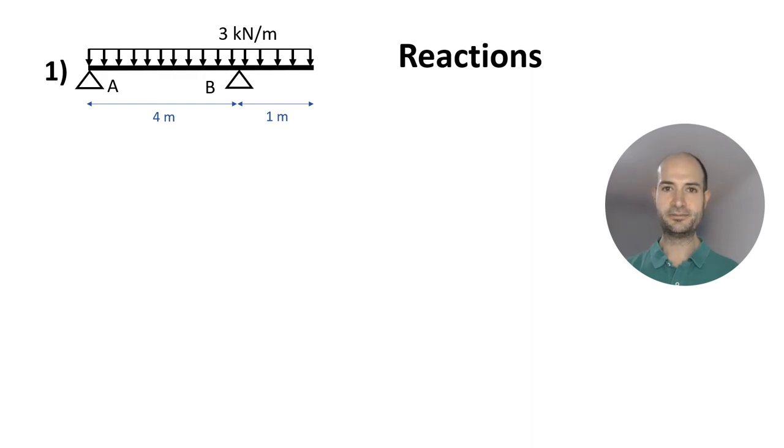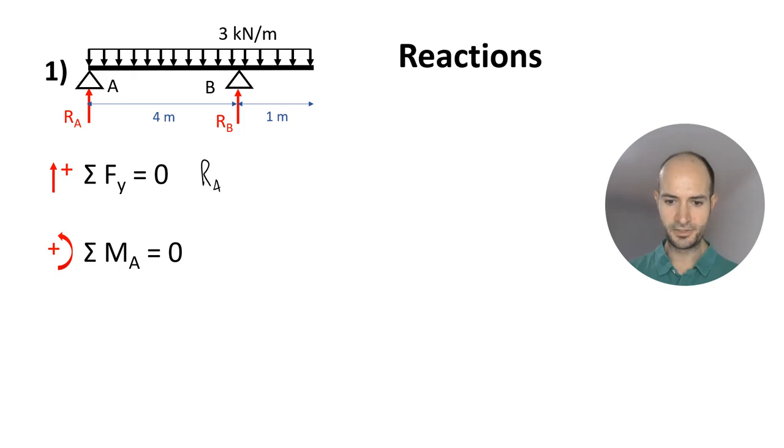We have a cantilever with a 3 kN per meter line load. As usual, we want to solve first the reactions and then the bending moment. We will use two equations of statics: summation of vertical loads equals zero and summation of moments on A equals zero. Reactions. We have RA and we also have RB and those two together must equal the total line load. So, 3 kN per meter times 5 meters, that is 15 kN.